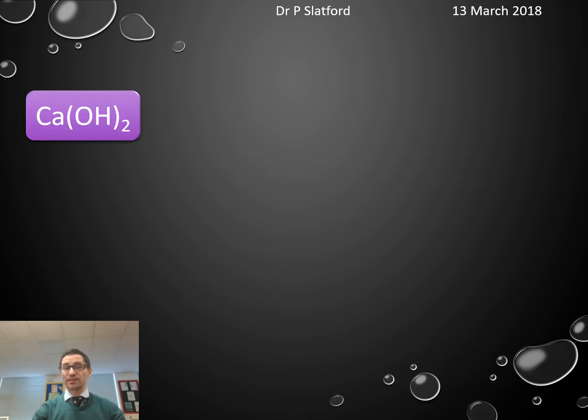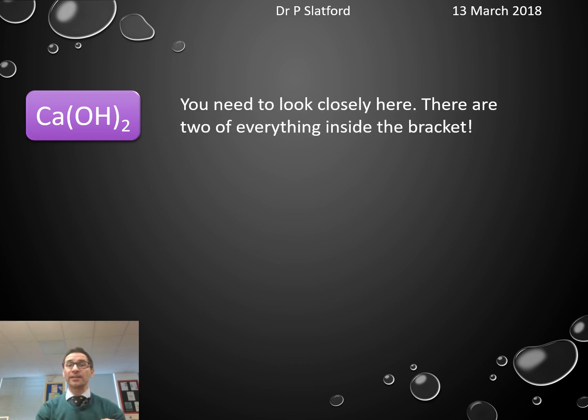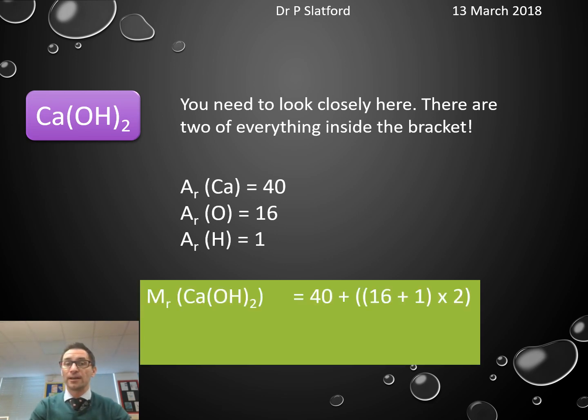Okay, calcium hydroxide. Now we've got a set of brackets here, so you've got to be a little bit careful. This 2 on the outside of the brackets means you've got two of everything inside the brackets. The atomic mass of calcium is 40, the atomic mass of oxygen is 16, and the atomic mass of hydrogen is 1. Now, the relative formula mass of calcium hydroxide then is 40 for the calcium, and then you've got this 16 plus 1, which is the oxygen and hydrogen inside the brackets, but then I've multiplied it here by 2. It's just two lots of everything inside the bracket. That adds up to 74.